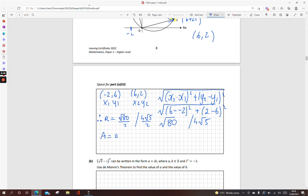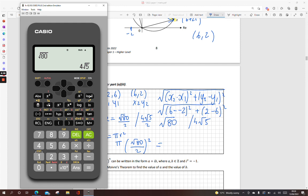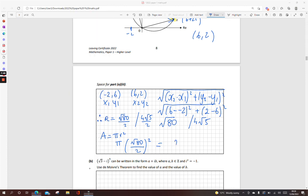Now, the area now is pi r squared, pi times root 80 over 2 squared. And it says leave it in terms of pi. So, all I'm going to do is work out the root 80 over 2 squared. I get 20, and then I have a wee pi on the end of that. So, 20 pi square units.